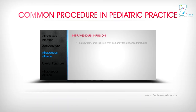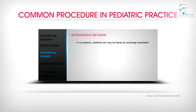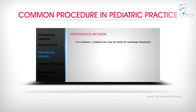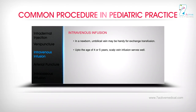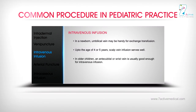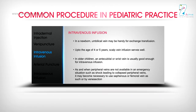Intravenous infusion: In a newborn, the umbilical vein may be handy for exchange transfusion. Up to the age of 4 or 5 years, scalp vein infusion serves well. In older children, an antecubital or wrist vein is usually good enough for intravenous infusion. When peripheral veins are not available in an emergency situation such as shock leading to collapsed peripheral veins, it may become necessary to use the saphenous or femoral vein, or by venisection.